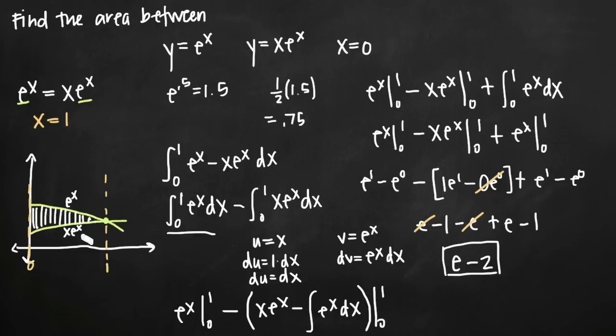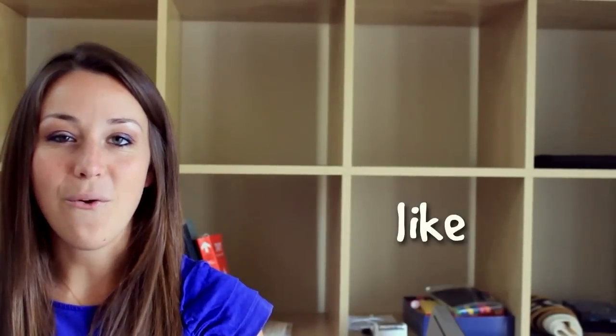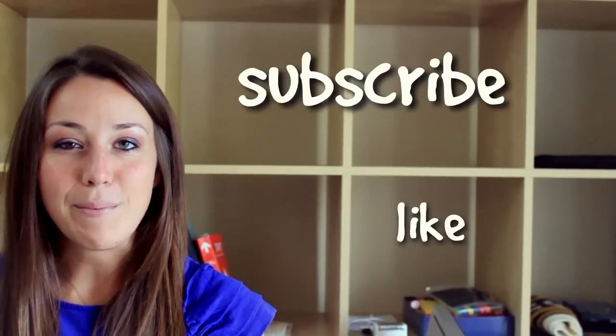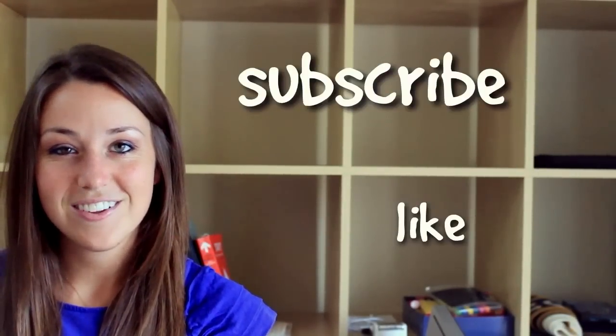So e minus 2 is the area between the curves y equals e to the x and y equals xe to the x on the range 0 to 1. I hope you found that video helpful — like and subscribe to be notified of future videos.